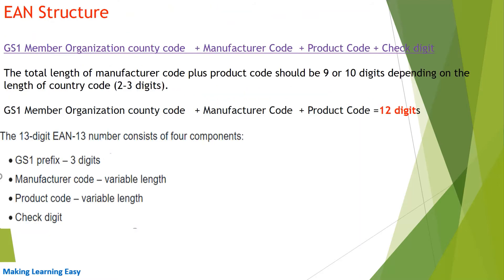Now let's see the structure of EAN-13. The EAN code consists of: member organization country code, plus manufacturer code, plus product code, plus check digit — all totaling 13 digits. The member organization country code is two to three digits: for some countries it is two digits and for others it is three digits. The country code plus manufacturer code plus product code together would be 12 digits.